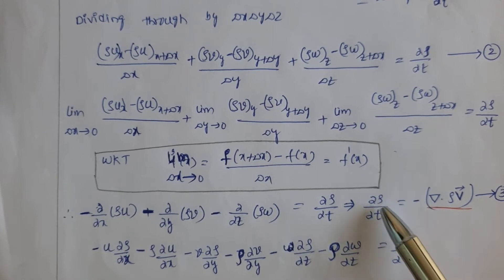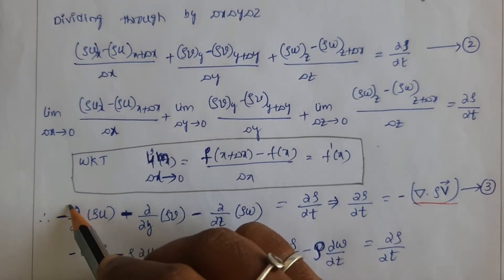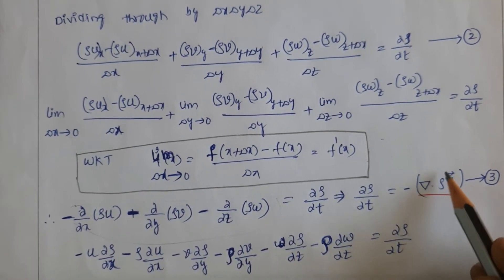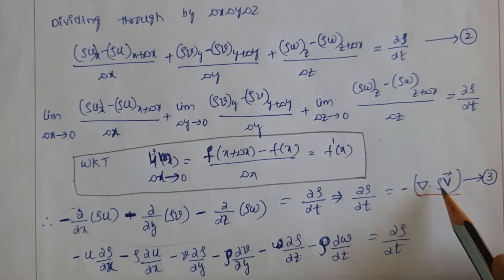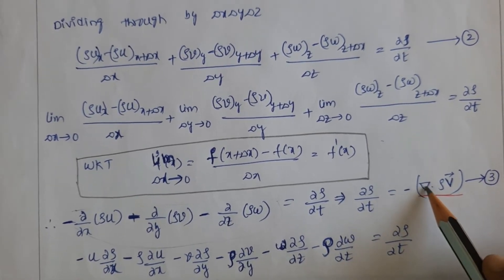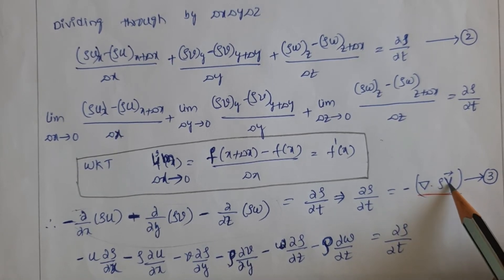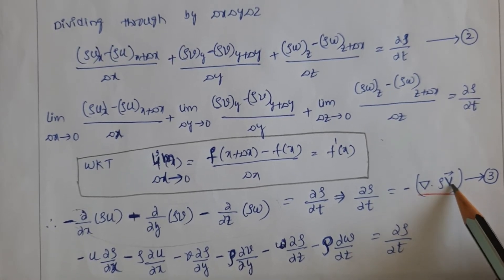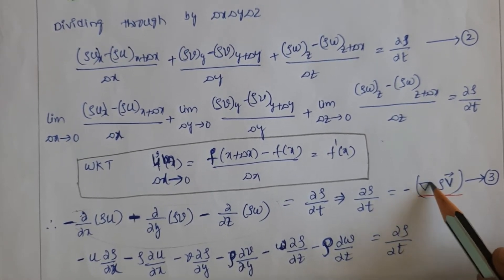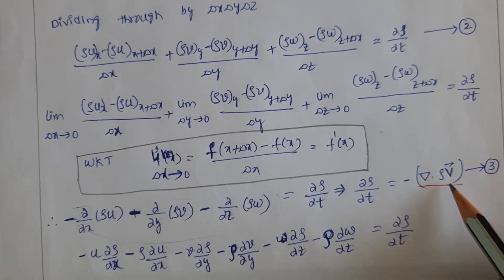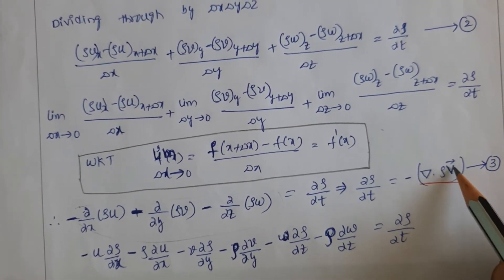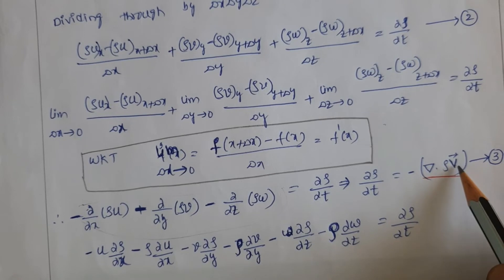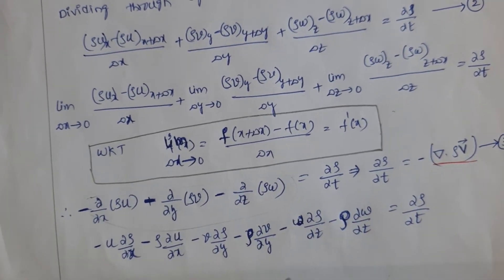The complete term is represented as the divergence of the velocity vector (∇·(rho·v)). This is called the vector operator applied to a vector field, and it produces a scalar quantity. Since it is a dot product of two vectors, it produces a scalar quantity of the vector field — this is the divergence of the velocity vector.